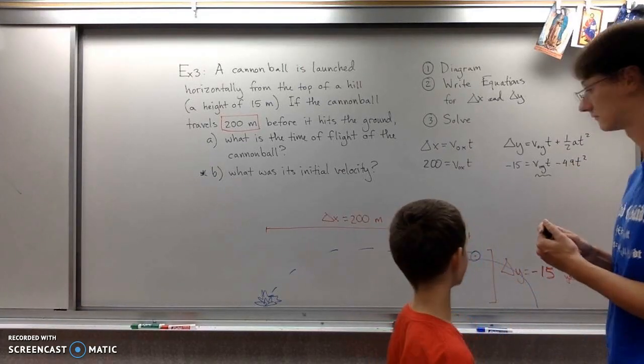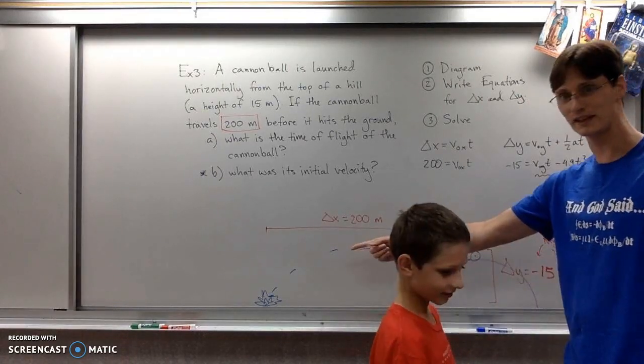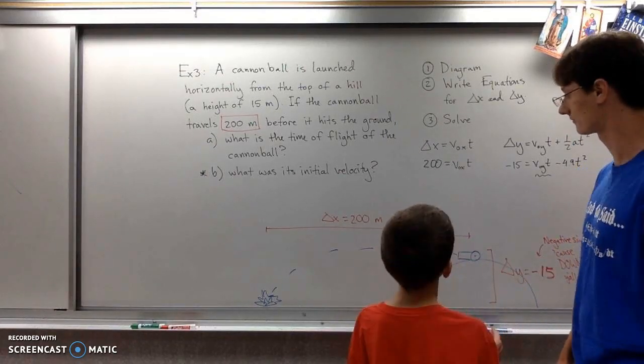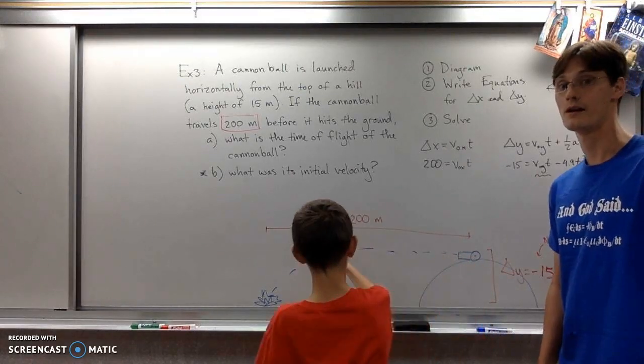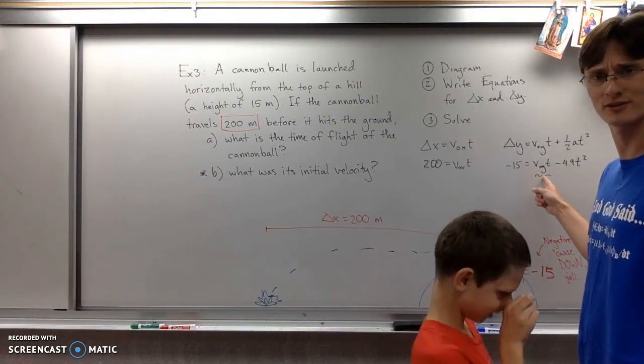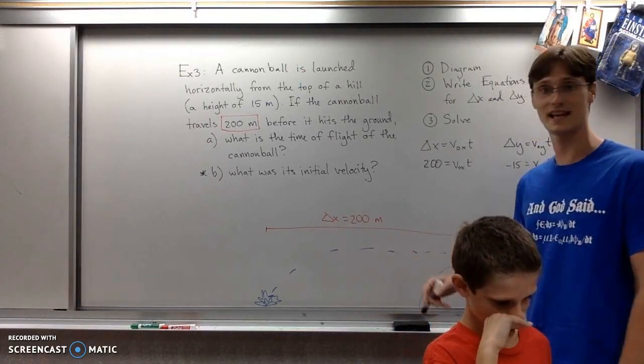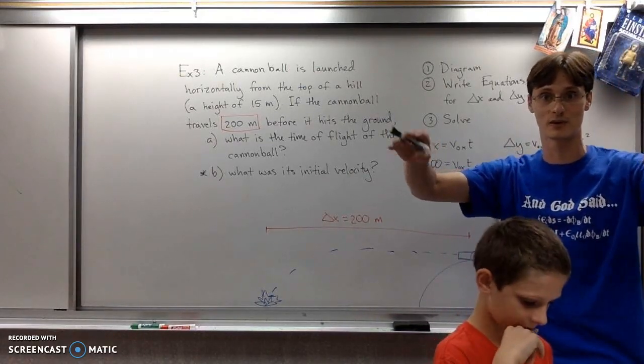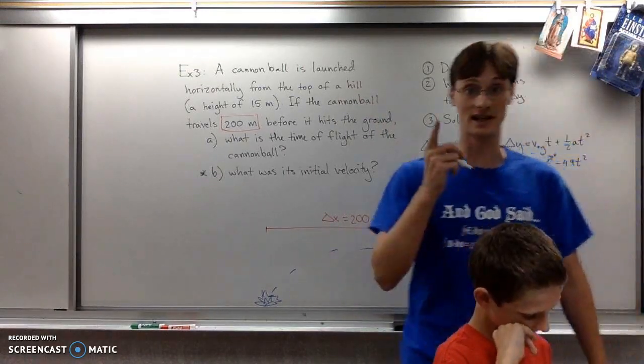Dad, the vertical velocity of the cannonball is zero. It's not zero—it goes really fast sideways. Exactly. It doesn't go up, only forward and down. The boy speaks the truth. The vertical velocity is zero because of components. If we launch the cannonball completely sideways, the vertical component is zero. Now we can solve this equation.